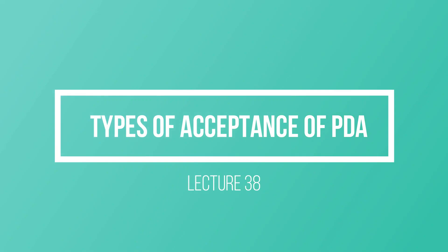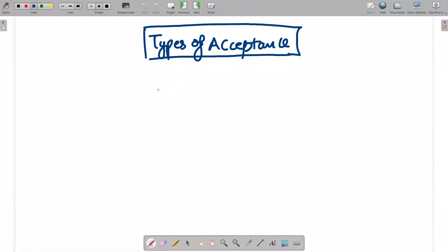Hello guys, I hope everyone is fine. In today's video we will discuss the types of acceptance of pushdown automata. There are two types of acceptance: one is known as final state acceptance.